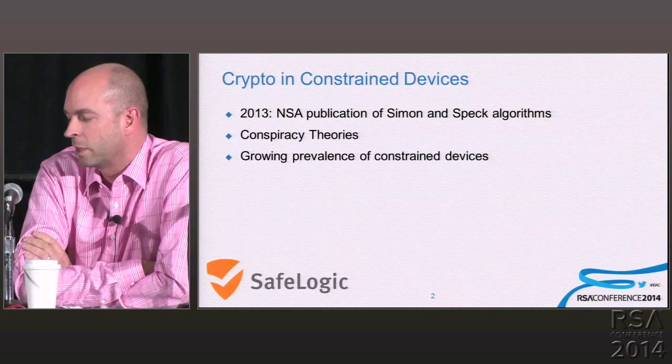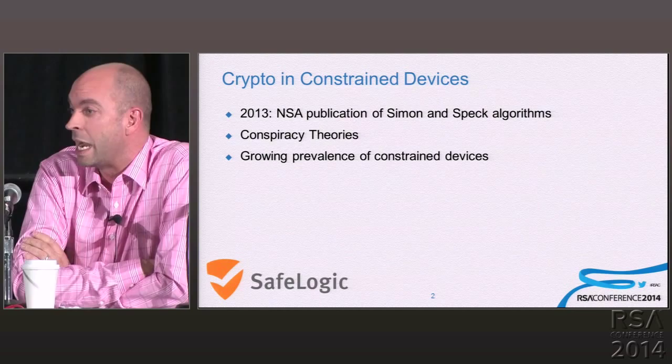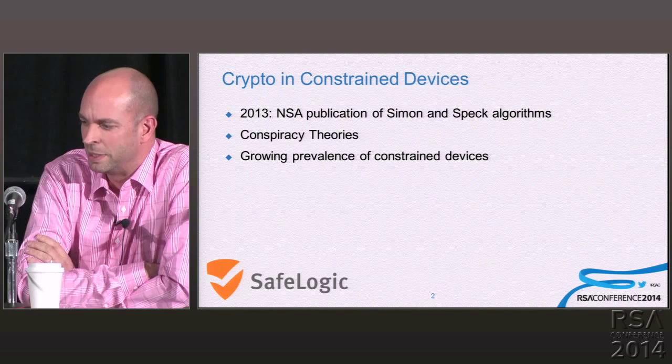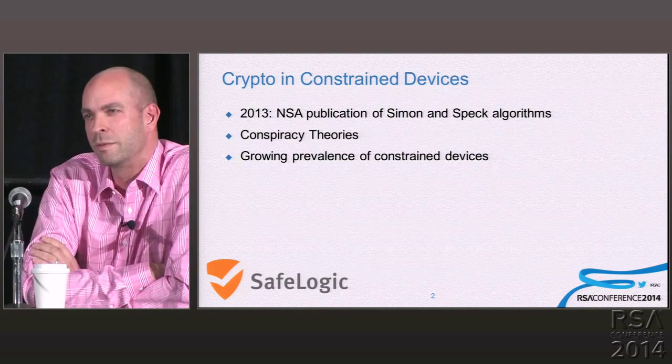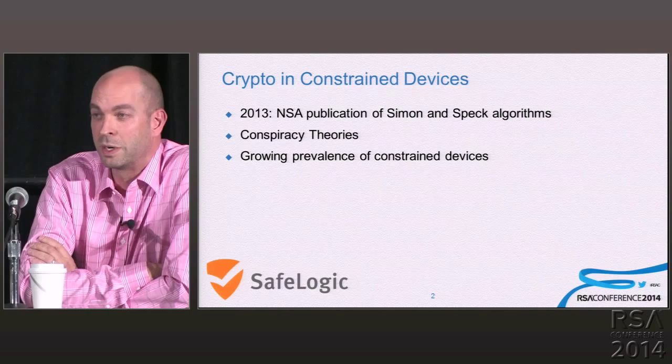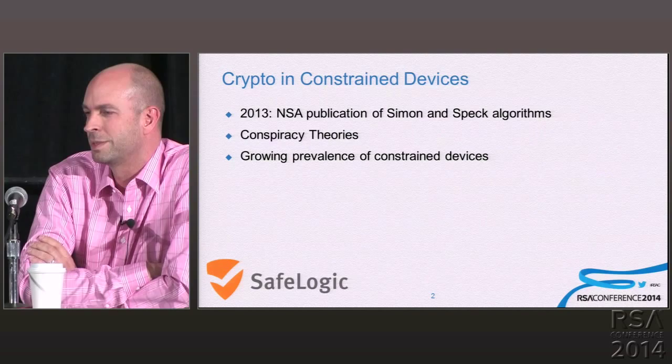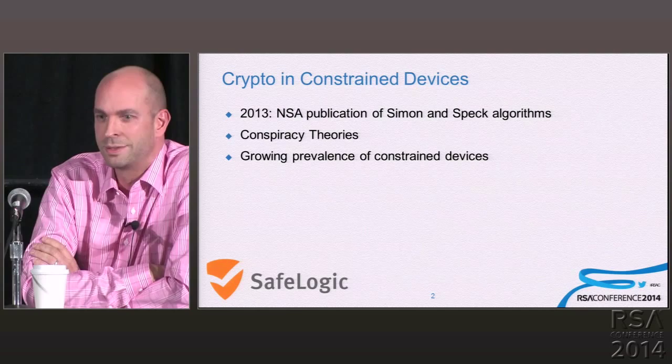Getting into crypto for constrained devices, one thing that kicked us off relatively recently — which Whit mentioned yesterday at the crypto panel — was NSA's release of the Simon and Speck algorithms, specifically designed for constrained environments. Whit has a massive background on those algorithms. Almost regardless of how good or bad the algorithms were, considering the source and the timing of their release, there were some conspiracy theories about what's in these algorithms and whether there was sufficient external cryptanalysis.